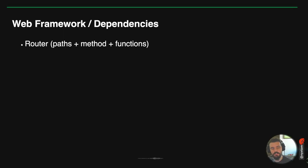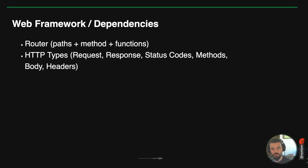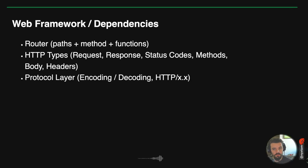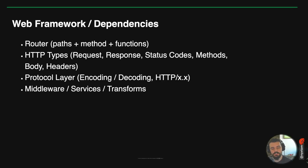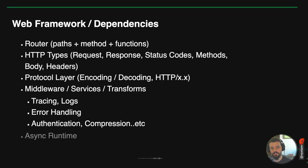Think about what the minimum viable dependencies are for your single-purpose application. You need something like a router to route paths, HTTP types for request, response, status codes, headers, and body, and a protocol layer. Consider whether you actually need HTTP/2 or HTTP/3. You may also want middleware for tracing, logs, and error handling, but maybe not authentication for a simple static markdown blog.